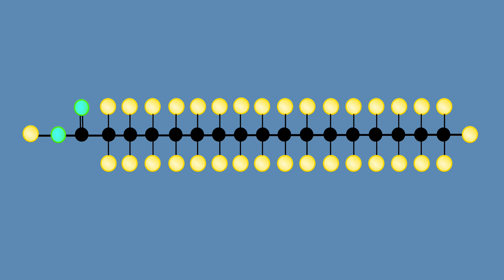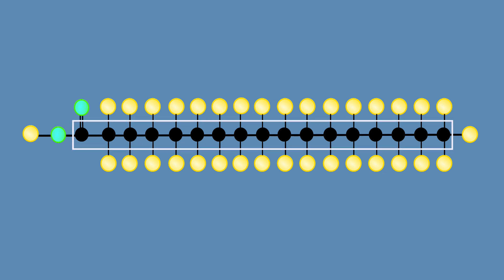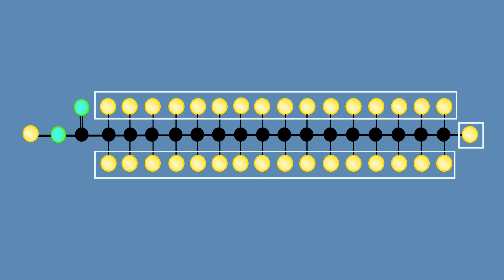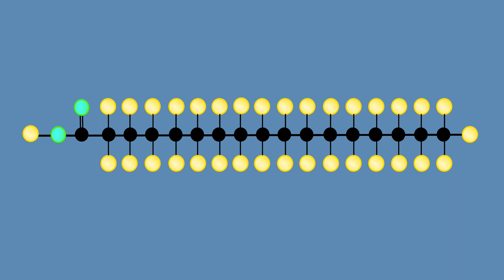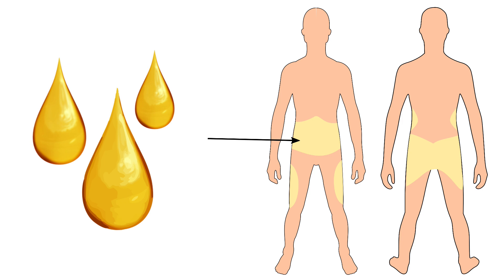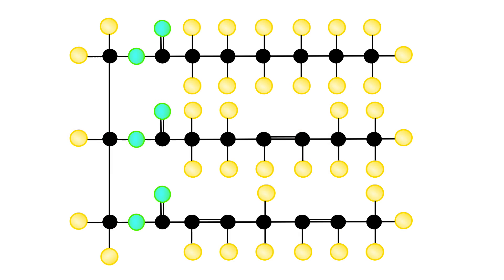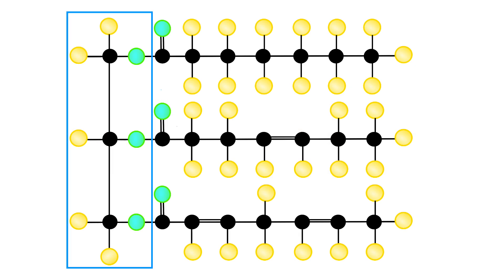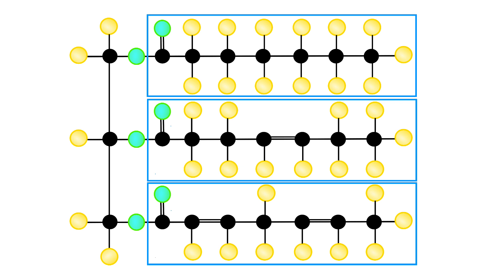The building blocks of fats are fatty acids. They consist mainly of simple chains of carbon atoms, bonded to one another and to hydrogen atoms. The fatty acid chain has two ends: a carboxyl end and a methyl end. In our diet, the main source of fatty acids is in the form of triglycerides, which are the main storage form of fat in our body. The structure of triglycerides has one glycerol attached to three chains of fatty acids.